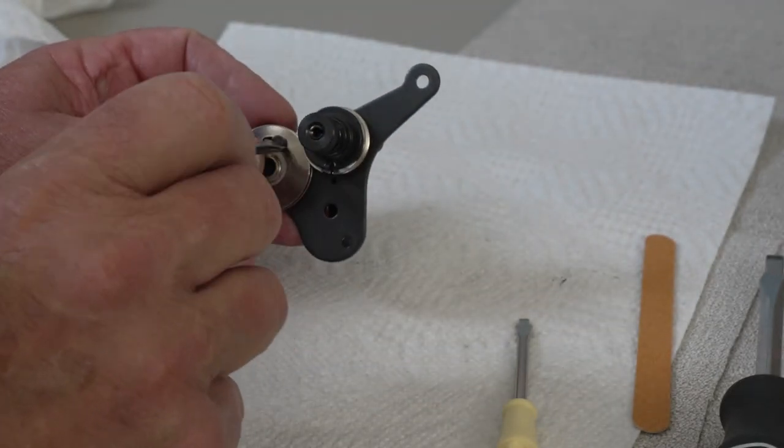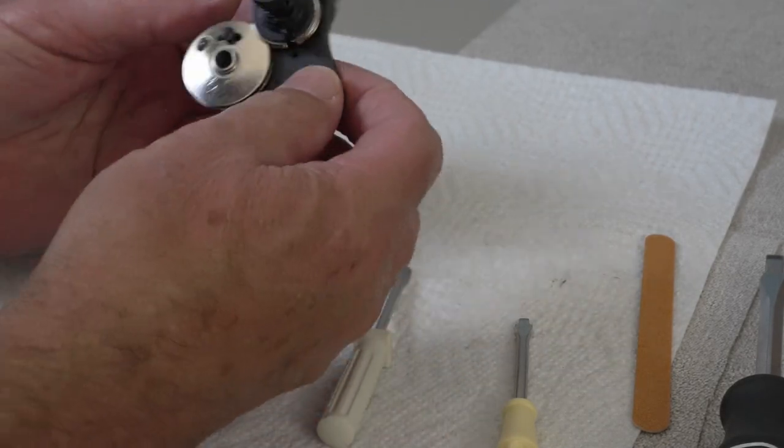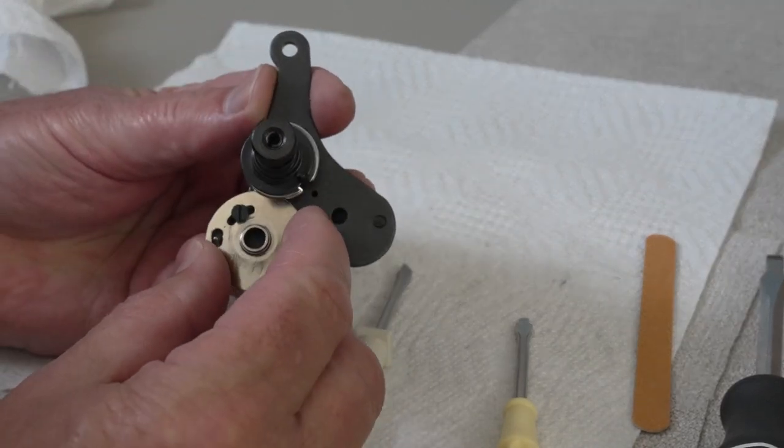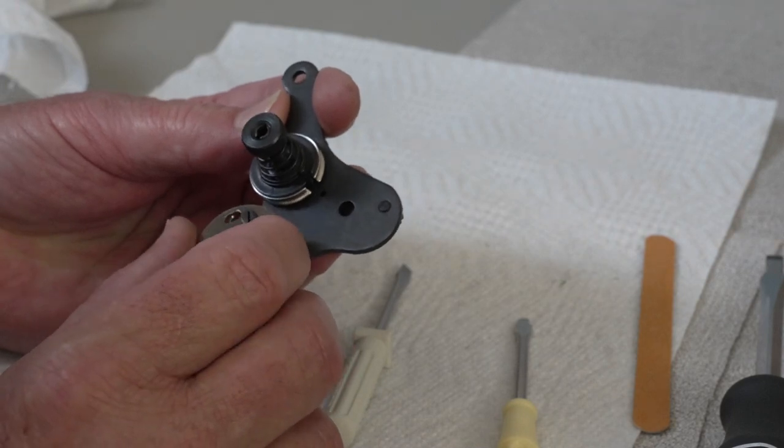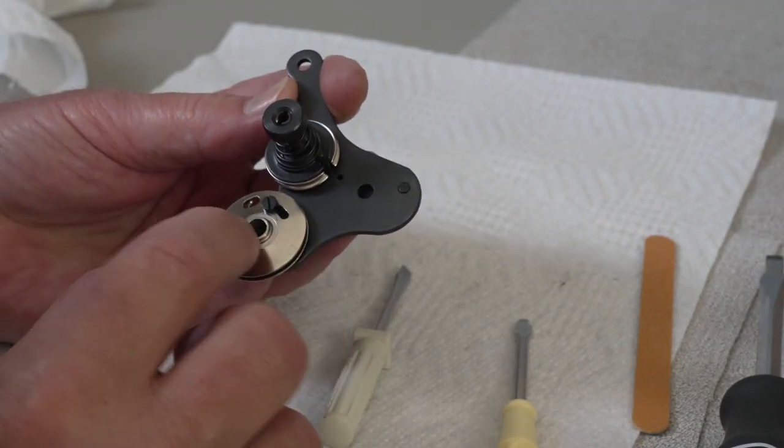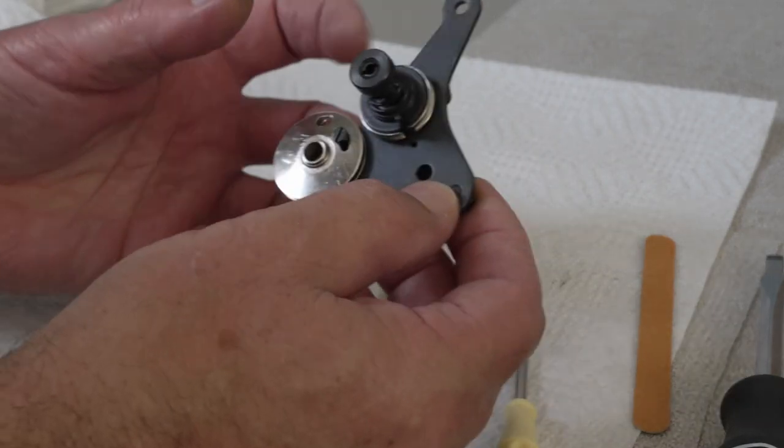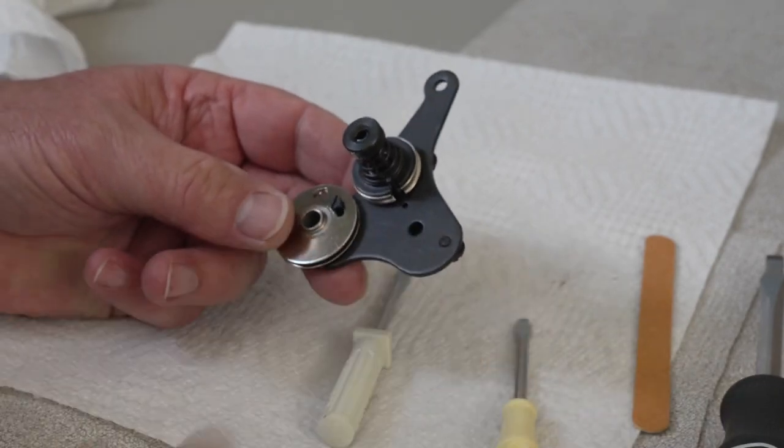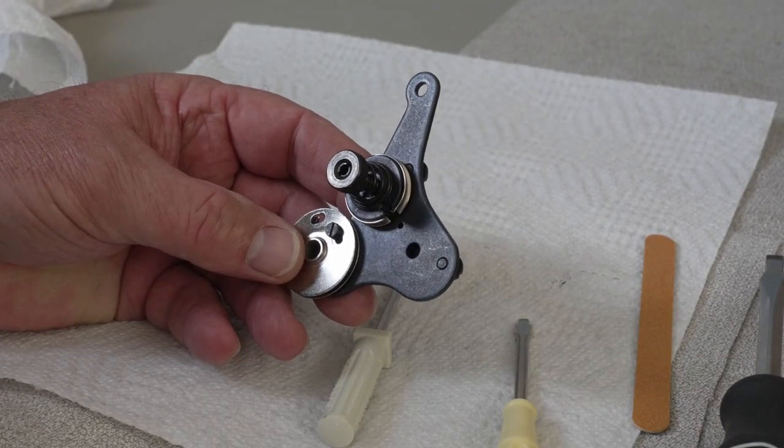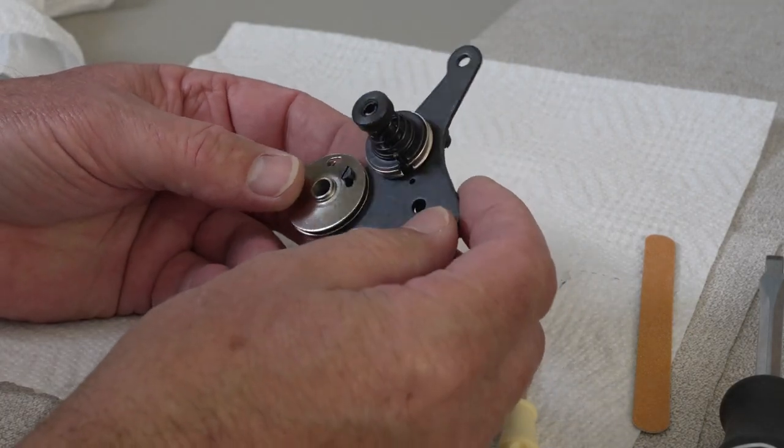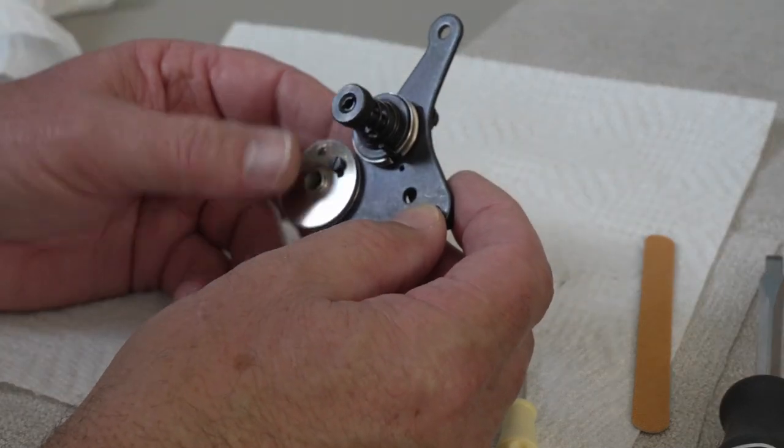Now you don't want to get this super tight. All you want to do is snug it up so that this will still move back and forth. This won't move, but you can move this back and forth to adjust how much your take up spring is moving. So I'm going to get back over to the machine and show you how to put this back on. And then we'll just check it to see how it's working and what we have to do to make any adjustments to make it disengage and engage properly.